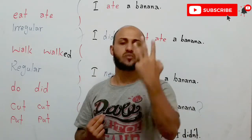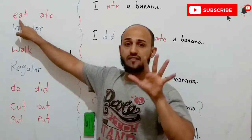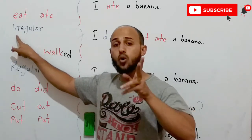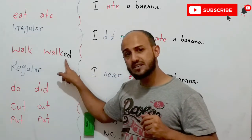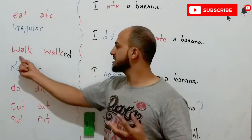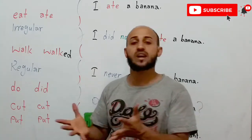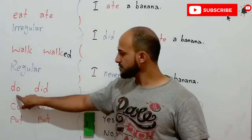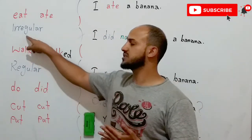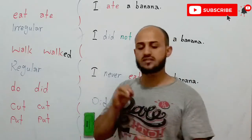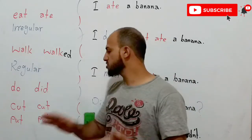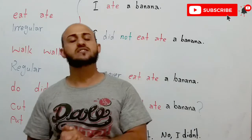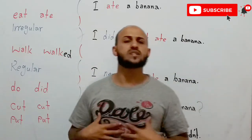We have two or three kinds of verbs. First, irregular verbs — like 'eat' becomes 'ate' or 'do' becomes 'did' — the form changes. Second, regular verbs — like 'walk' becomes 'walked' — we add -ed but keep the same base. Third, verbs that stay the same — like 'cut/cut' and 'put/put' — no change at all. So those are the three kinds of verbs.